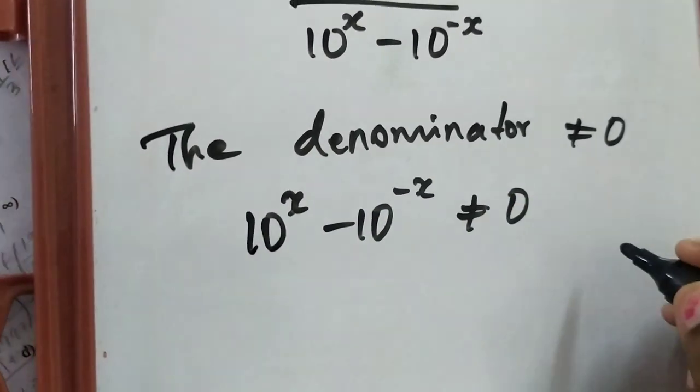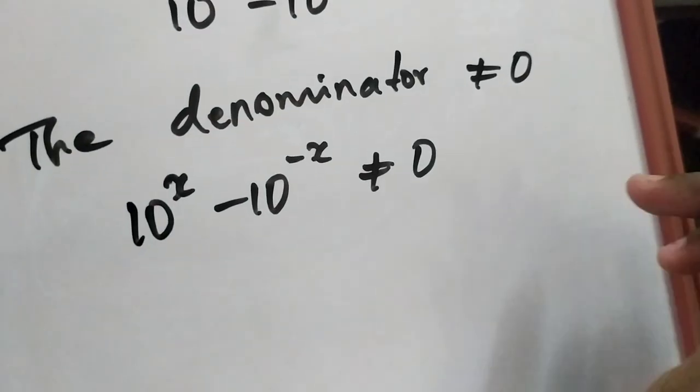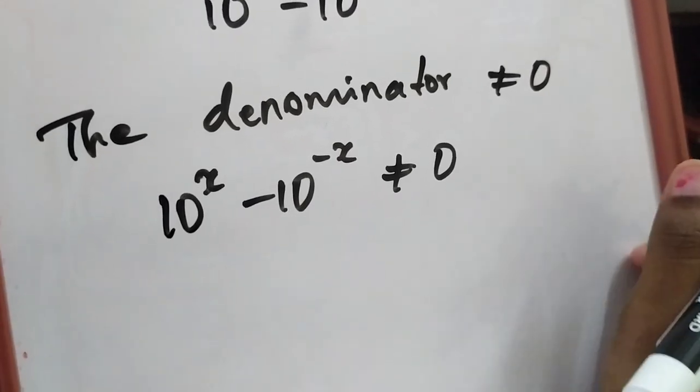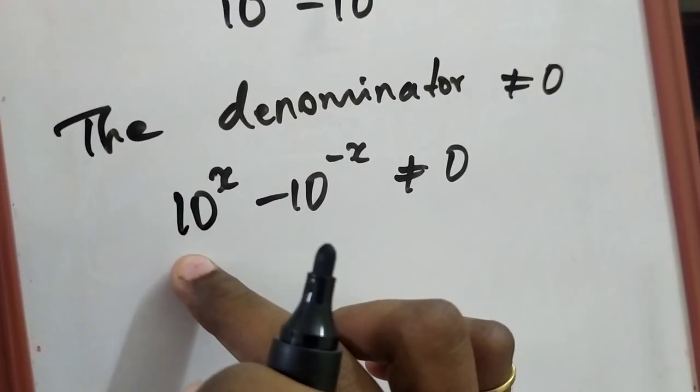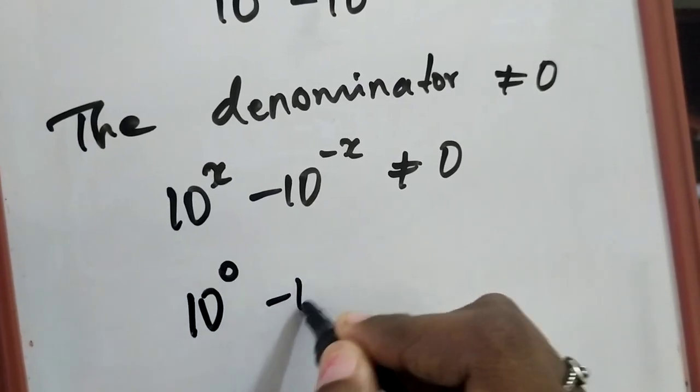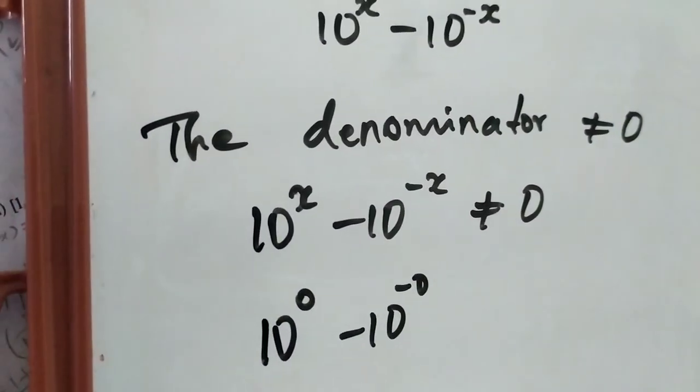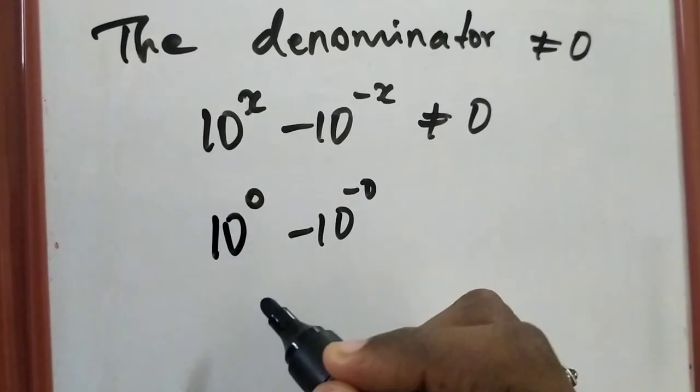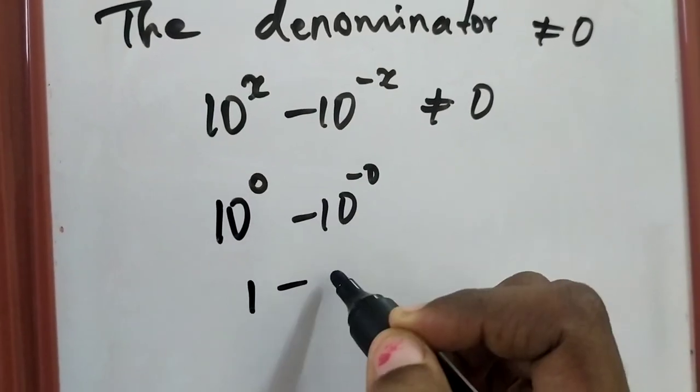Anything power 0 will give you 1. So suppose if you consider x as 0, then 10 to the power of 0 minus 10 to the power of minus 0, obviously anything power 0 is 1.